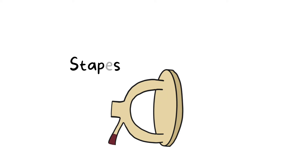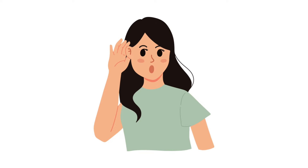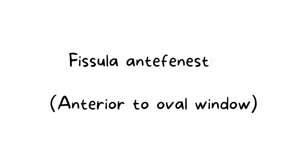This usually involves the stapes bone, which is one of the three bones of the middle ear, and this leads to fixation of the stapes footplate and hence hearing loss, because the stapes footplate is unable to move. Fissula ante-fenestram is an area just in front of the oval window in the middle ear and it is one of the very common areas for otosclerosis to happen.